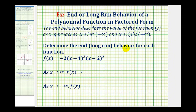We want to determine the end behavior, or long run behavior, for a polynomial function in factored form. The end behavior describes the value of the function, or y, as x approaches the left, or as x approaches negative infinity, and as x approaches right, or as x approaches positive infinity.